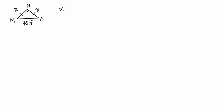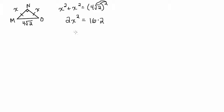So x squared plus x squared equals 4 root 2 squared. That gives us 2x squared. Distributing the squared to both parts: 4 squared is 16, and root 2 squared is 2, so we end up with 2x squared equals 32. Divide both sides by 2, you get x squared equals 16, take the square root of both sides, and x equals 4.